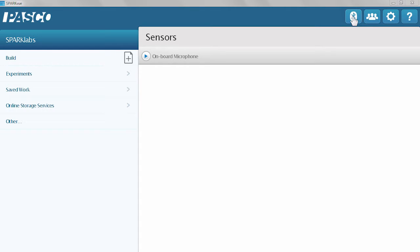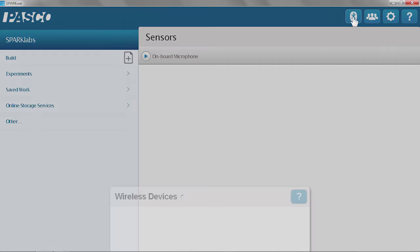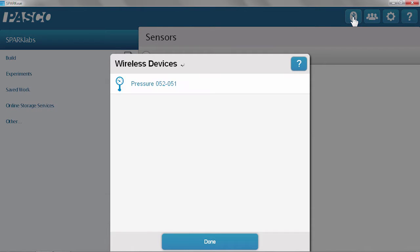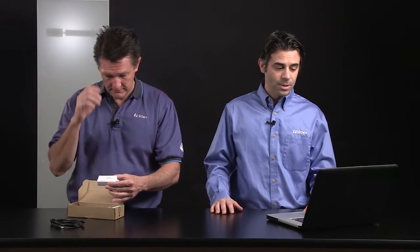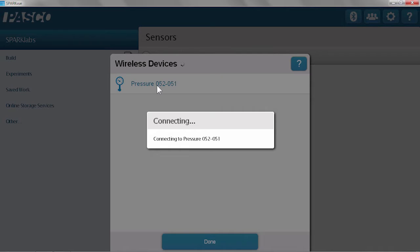So I'm going to use our SparkView software to connect the sensor. And because it is a BLE device, it supports in-app pairing. So I don't have to go into my system settings. I just have to touch the Bluetooth icon. And my wireless devices will pop up. I see the pressure sensor and I see an ID number, and that ID number matches the one on my little unit here. And that's great for classroom management.